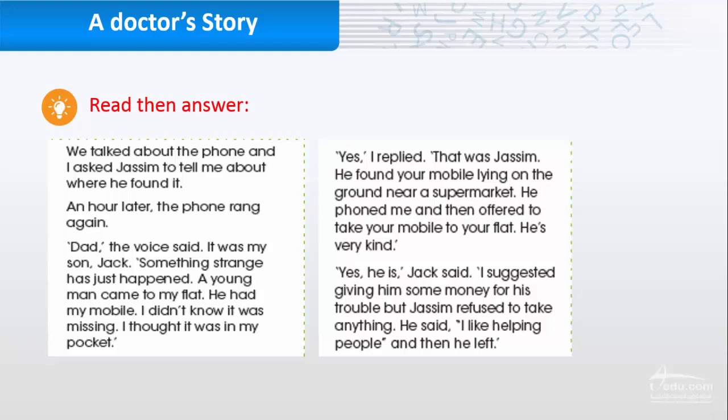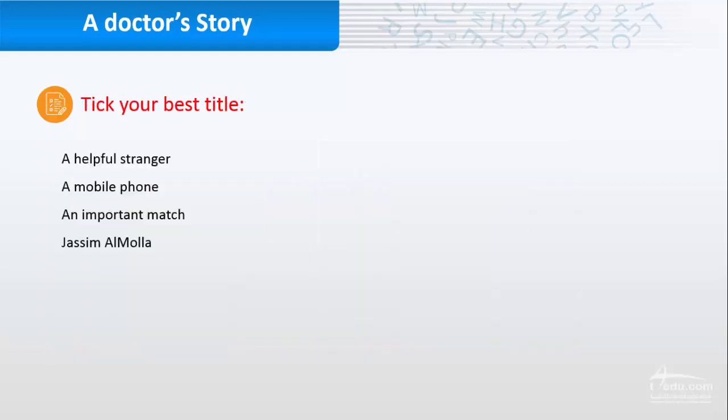So it's talking about someone who found a phone mobile, then he tried to return it to his owner. So what is the best title? A Helpful Stranger, A Mobile Phone, An Important Match, or Jassim Al Mulla? Of course, it's A Helpful Stranger because he helped Jack even though he didn't know him before.